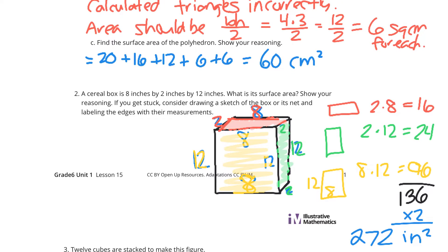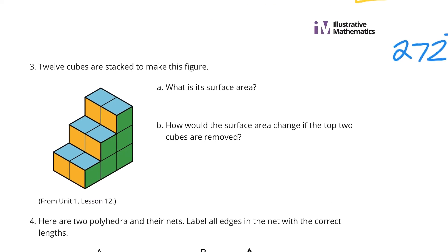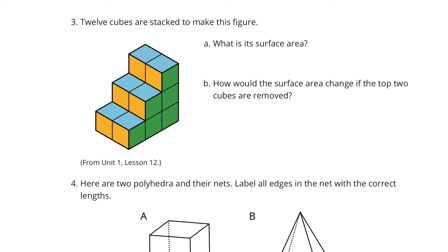Let's move on to question 3. 12 cubes are stacked to make this figure. What is its surface area, and how would the surface area change if the top two cubes were removed? Let's focus just on that first part. The surface area here, let's look at the yellow sides first.